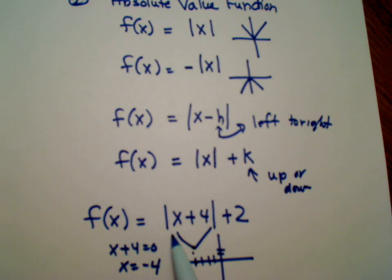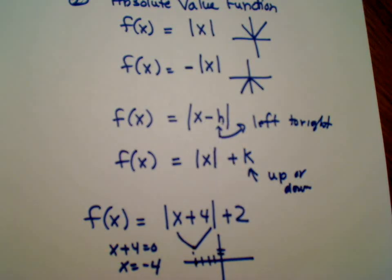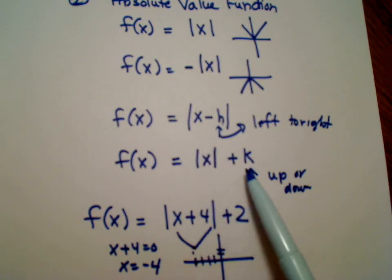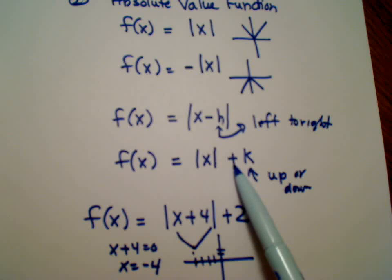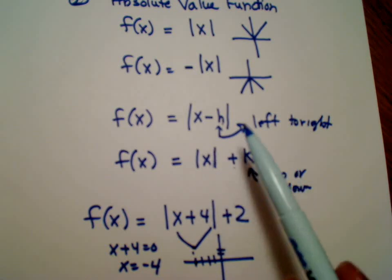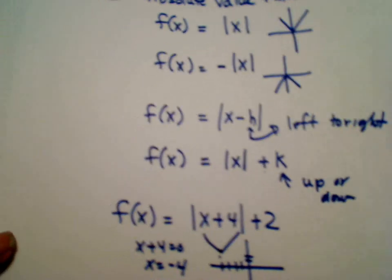So now notice here absolute values indicating to you have a V shape. If you have a number that is inside the absolute value, it's going to shift it from left to right and don't forget to set this equal to zero and solve for x. And then if you happen to have a number that is on the outside of the absolute value, you know that's going to actually make your V go up or down. So that's now the second type.